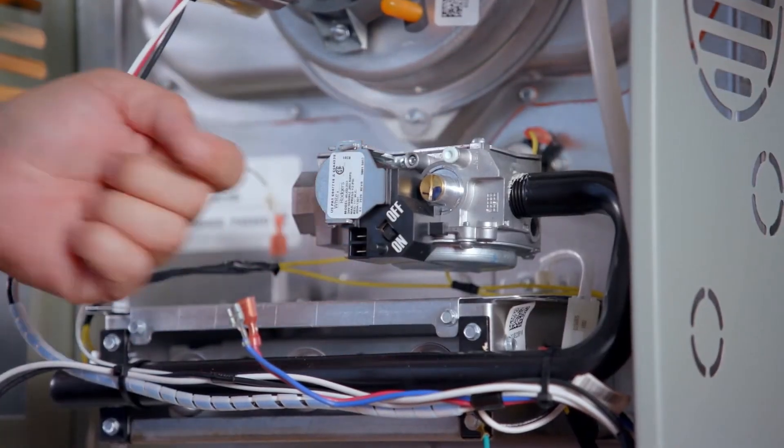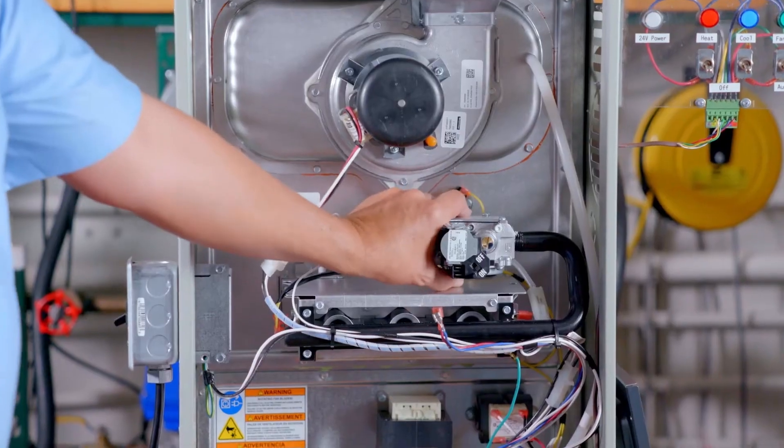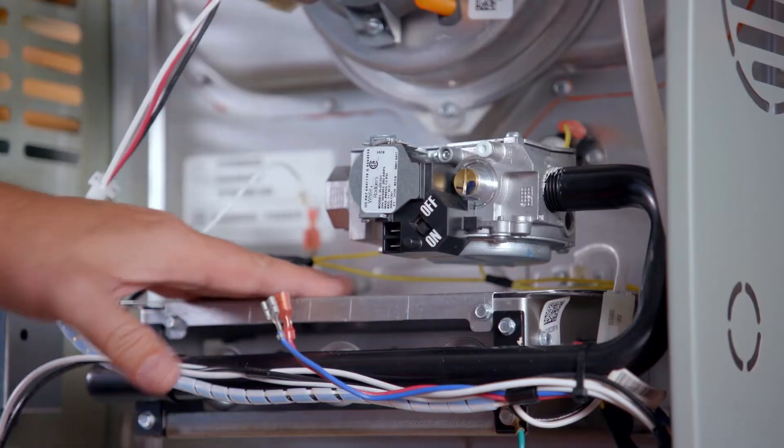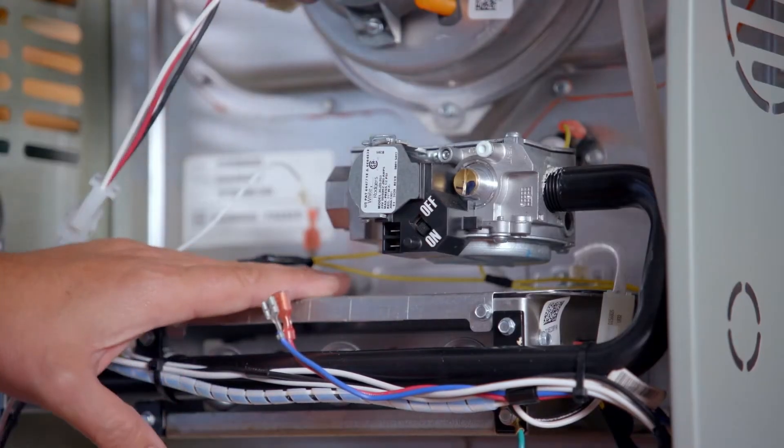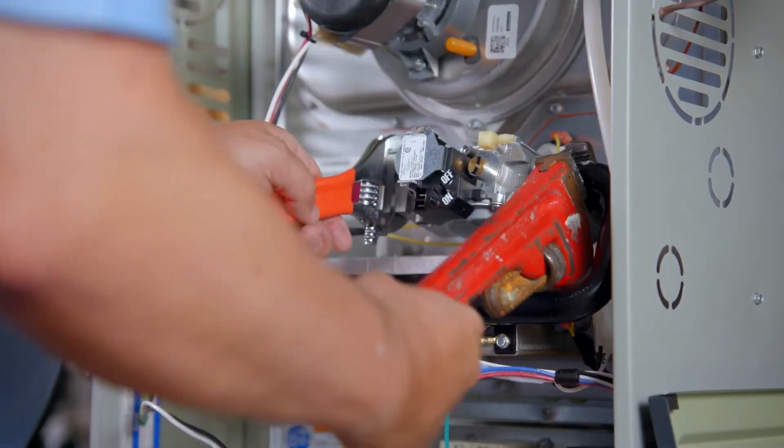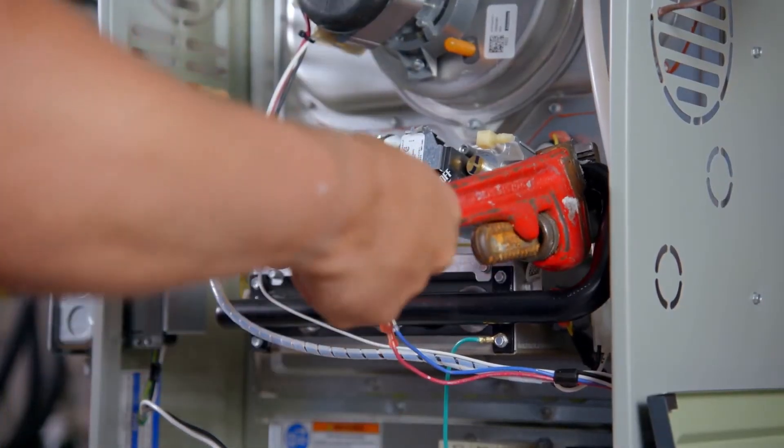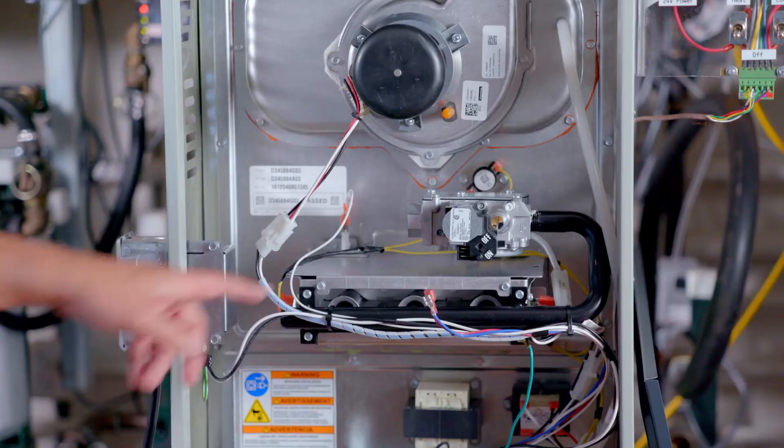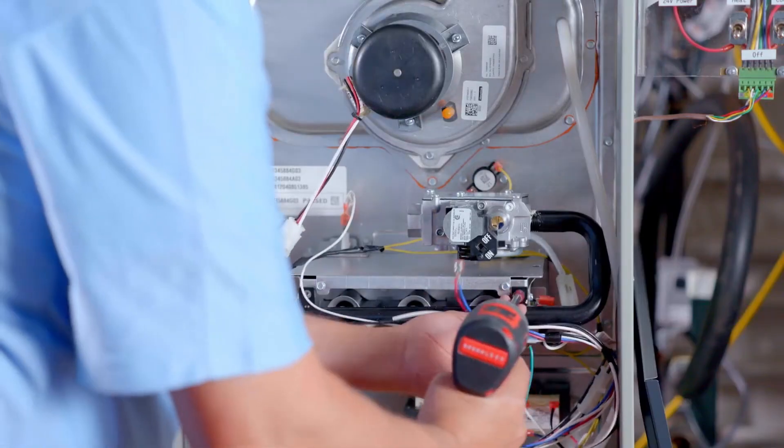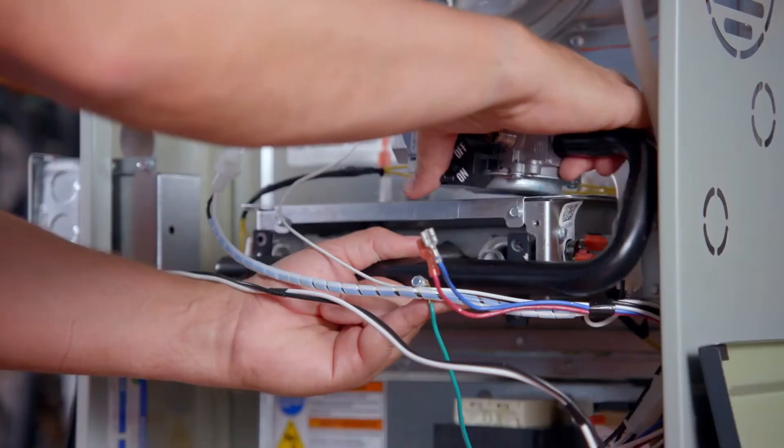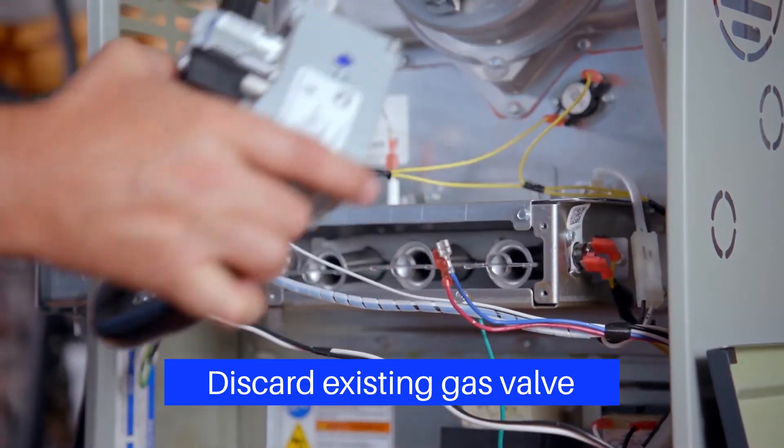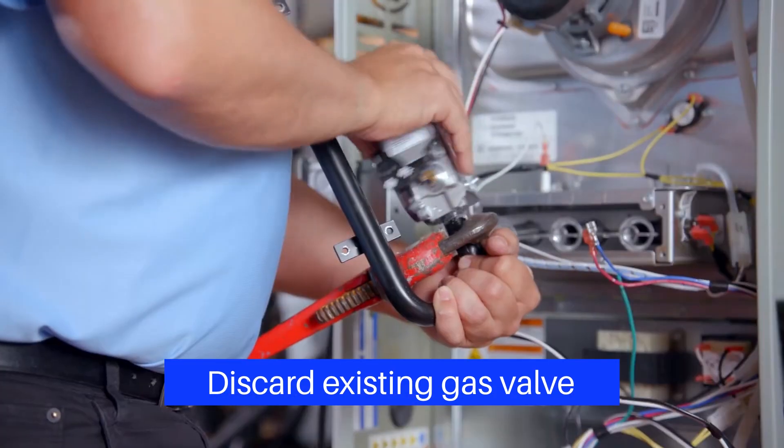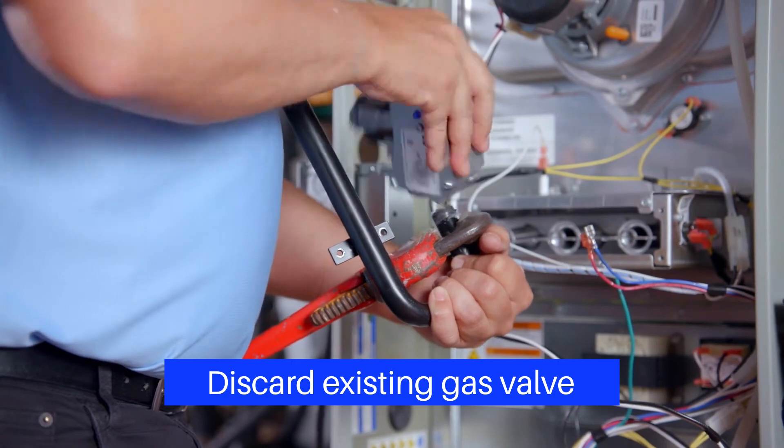Take note of the old valve orientation before removing. Determine if the existing valve can be spun off while in place. Use caution not to bend the manifold brackets by securing a wrench on the manifold prior to removing the existing valve. In some applications, the gas manifold must be removed. Remove the manifold bracket screws, allowing the valve and manifold to be removed together. The existing valve can now be removed and discarded.